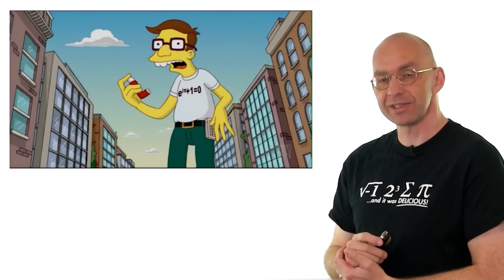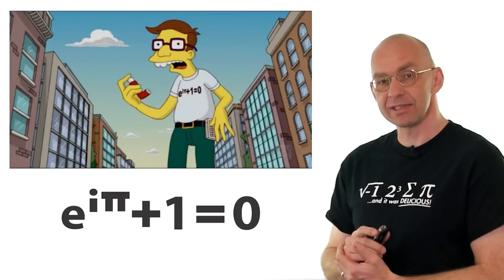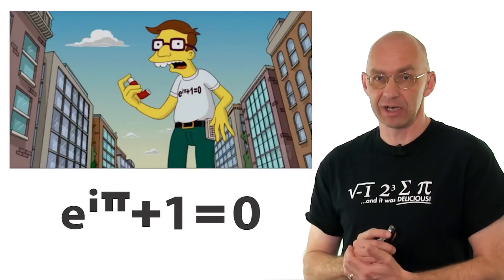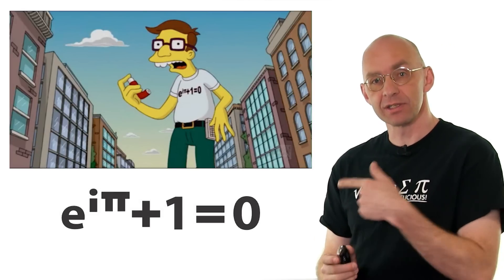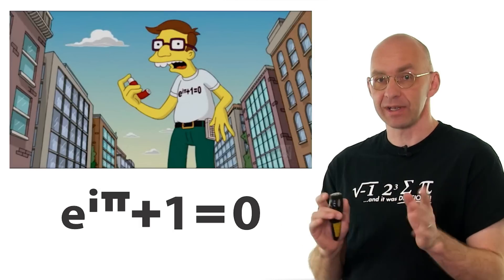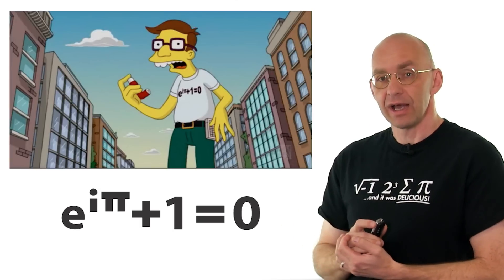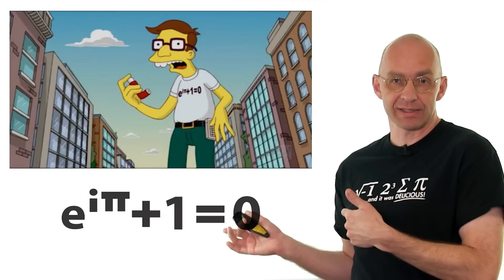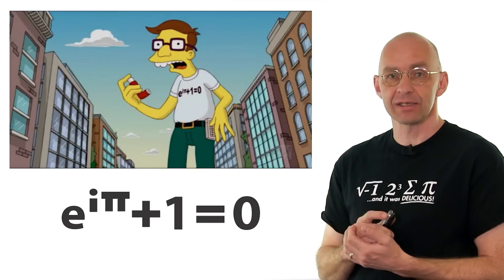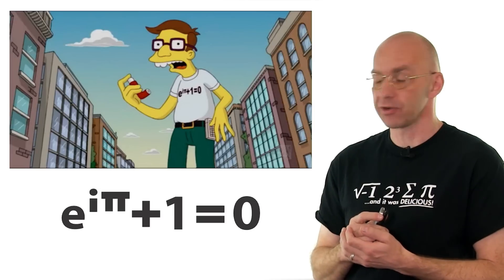There on the t-shirt — let's just enlarge it a bit. It says e to the i pi plus one is equal to zero. Very mysterious. Many mathematicians think this is the most beautiful thing ever, even better than Pythagoras Theorem. What I want to do today is kind of make sense of this identity. It's called Euler's identity, named after very famous mathematician Leonard Euler.